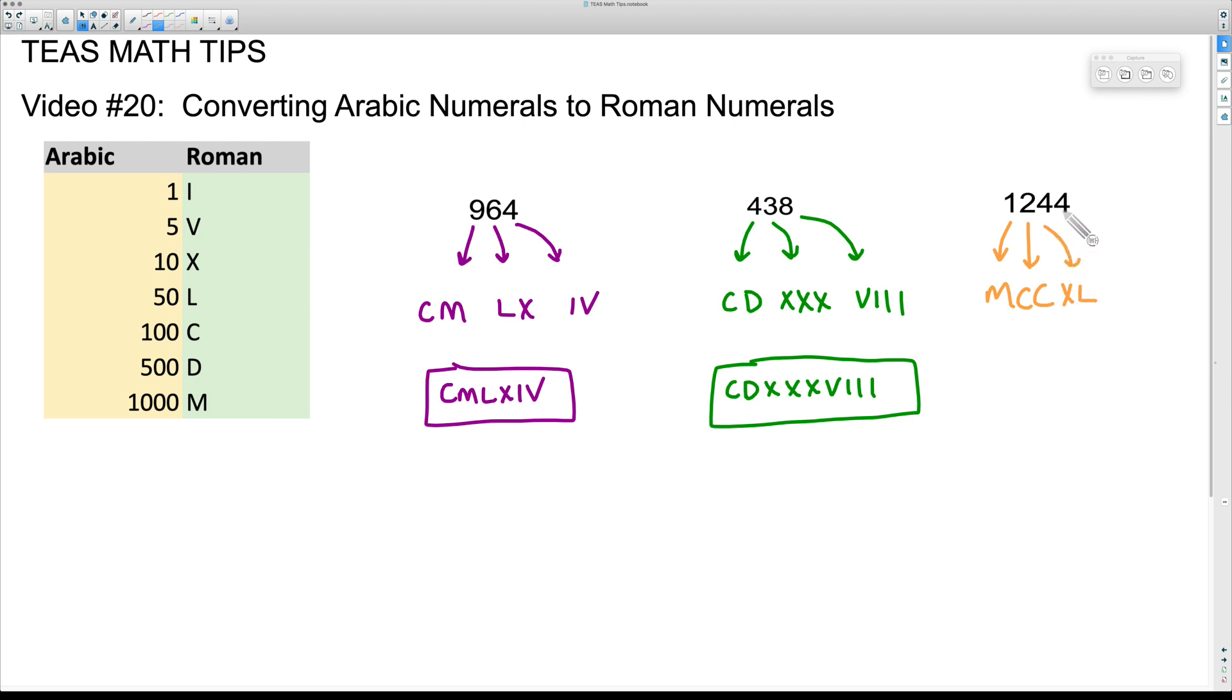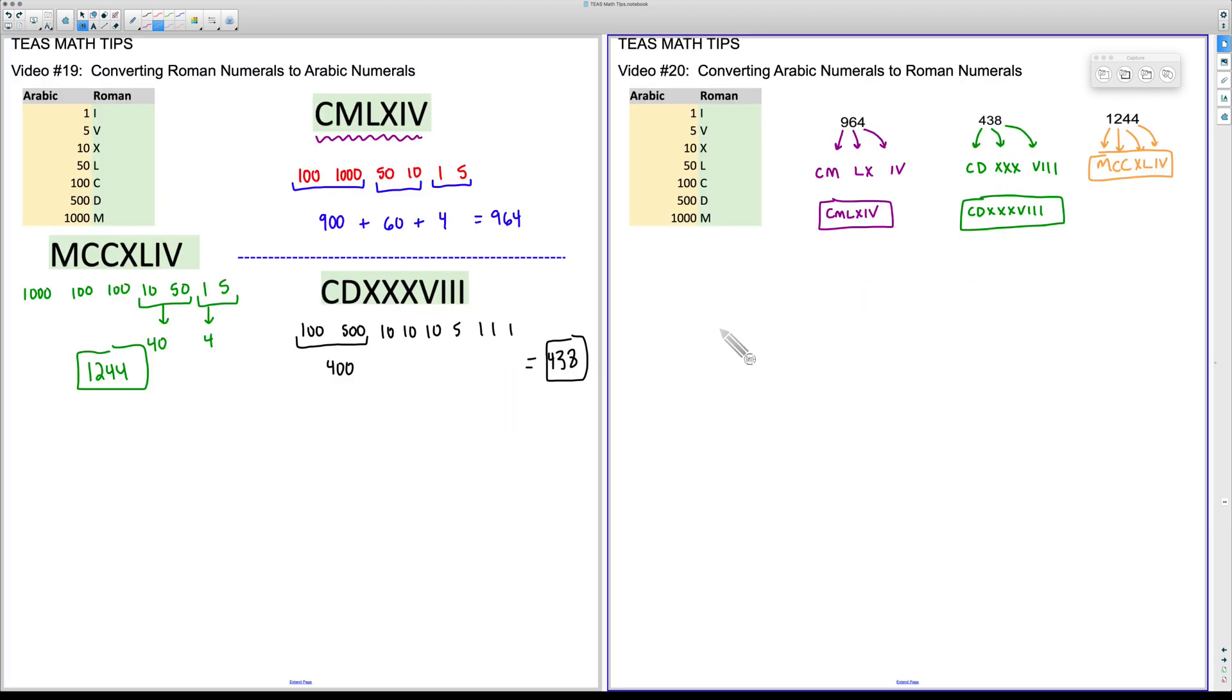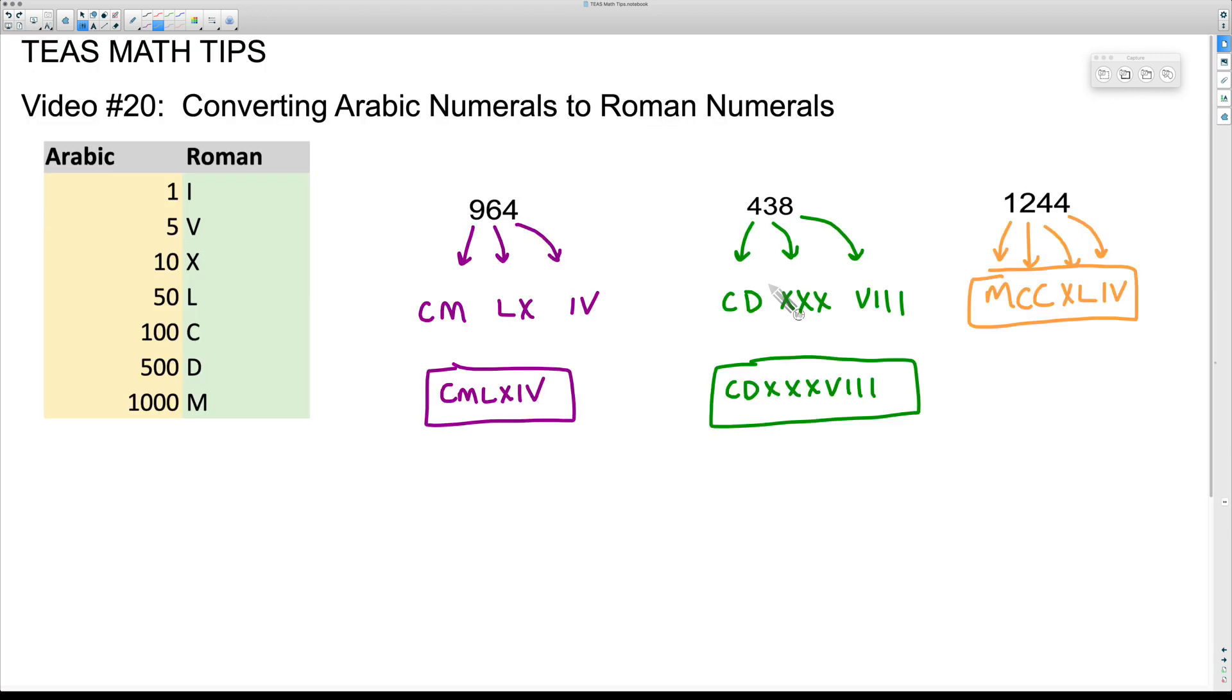Now let's think about this 4. Well, again, back to the grandfather clock, the 4 is represented as a tally with a V because this is 5 minus 1. Now if we check this back with video number 19, let's see if it matches up. MCCXLIV, MCCXLIV, perfect.